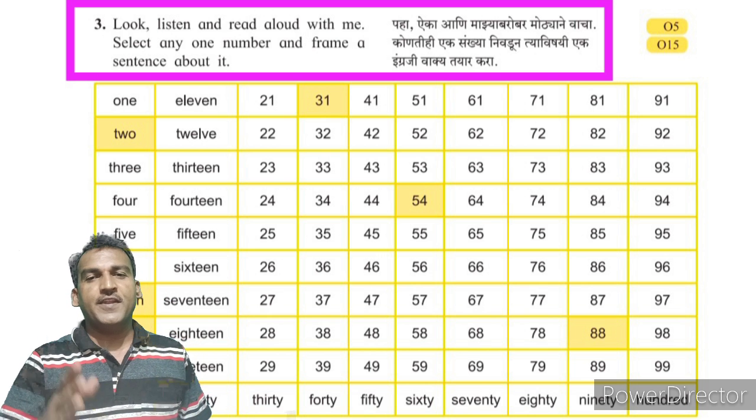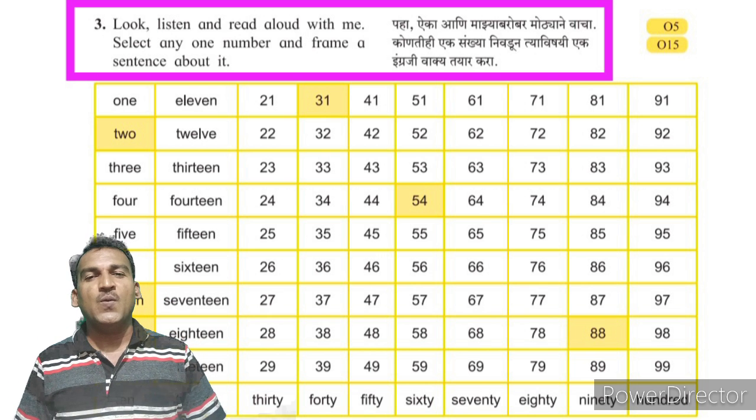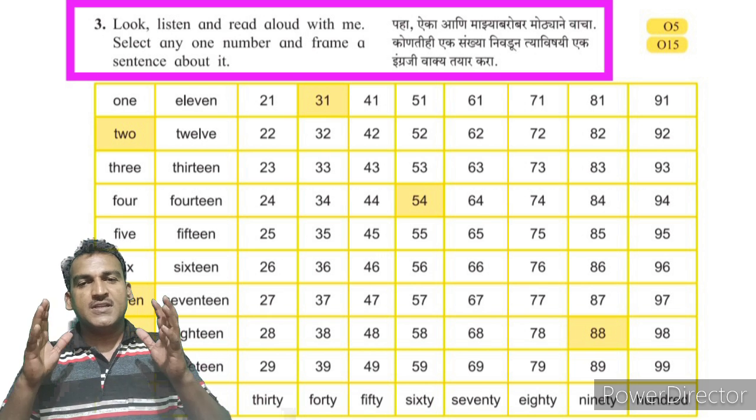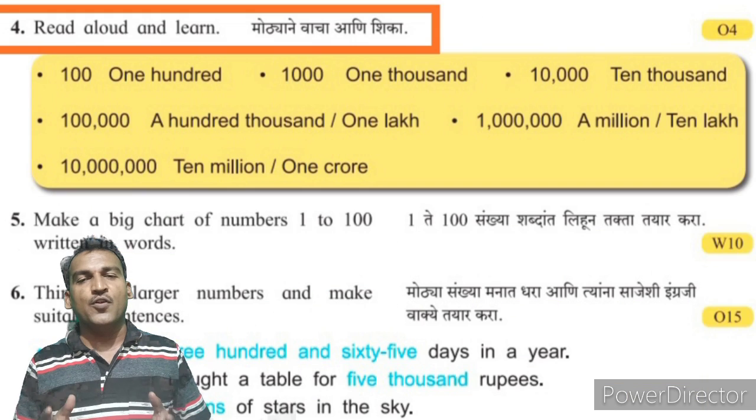So friends, in this video we have learned about Instruction number 3, 4, 5, and 6 from Unit 1, page number 7 of Standard 5 English — the topic of Number Work.